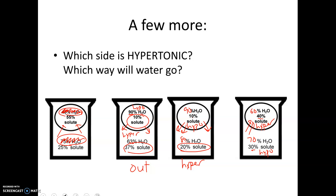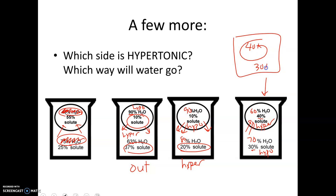That's how you solve these problems. Now, if they tell you the solute could pass and ask which way the solute will go — remember, anything that can pass goes from where there's more of that thing to where there's less. So if the solute could pass, with 40% solute inside and 30% outside, the solute would go out. But for these problems we were assuming the solute was stuck. Just keep in mind that if a solute can pass, it goes from higher to lower concentration.